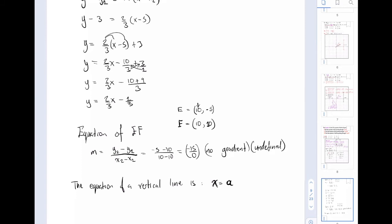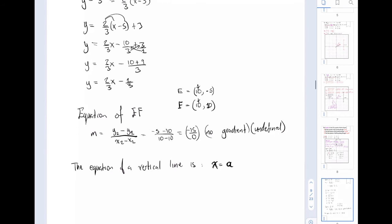So the equation of EF is x equals 10. Guys, whenever we have a vertical line or a horizontal line, then the equation simplifies down to something like this. The equation of a vertical line is x equals a. This is very important, guys, cannot stress this enough. So here EF is a vertical line and we ended up with no gradient, which is the same thing as saying that it's undefined.